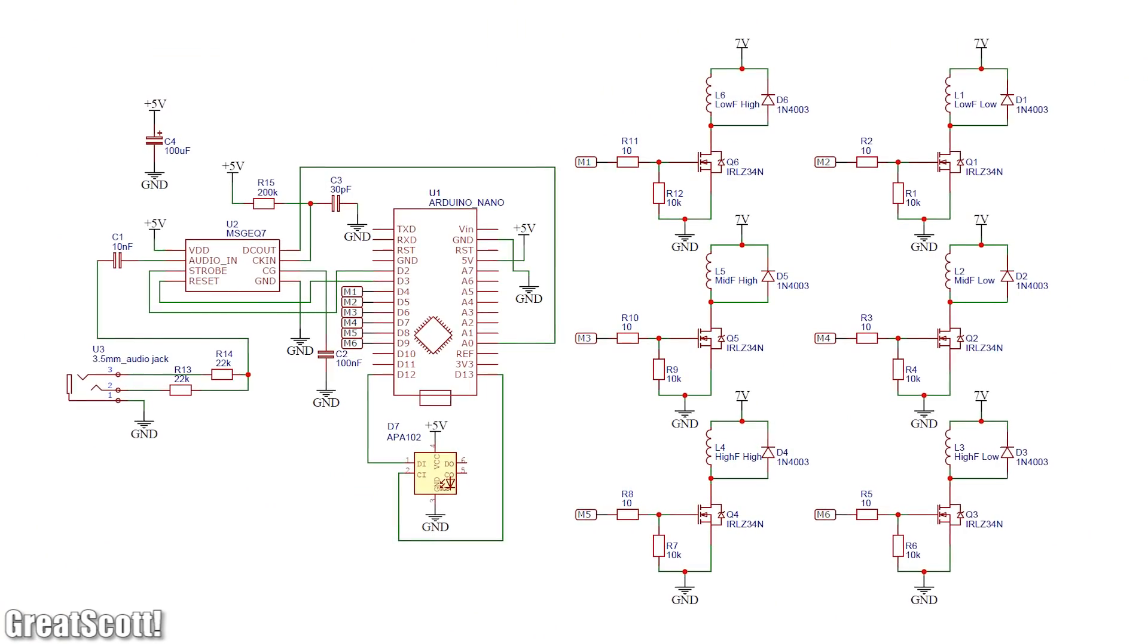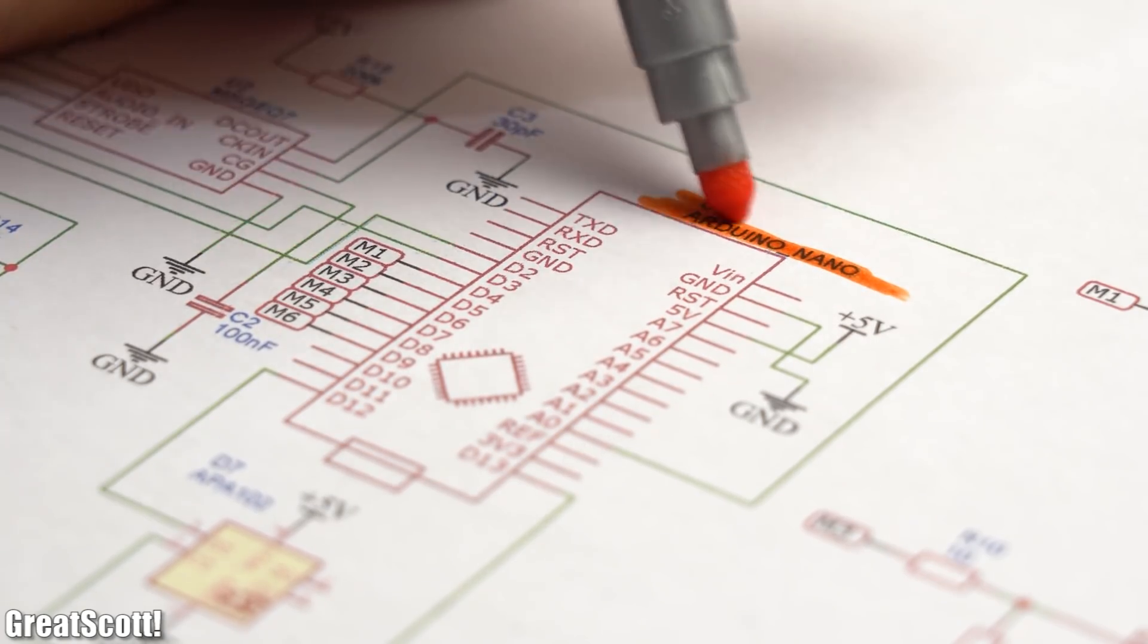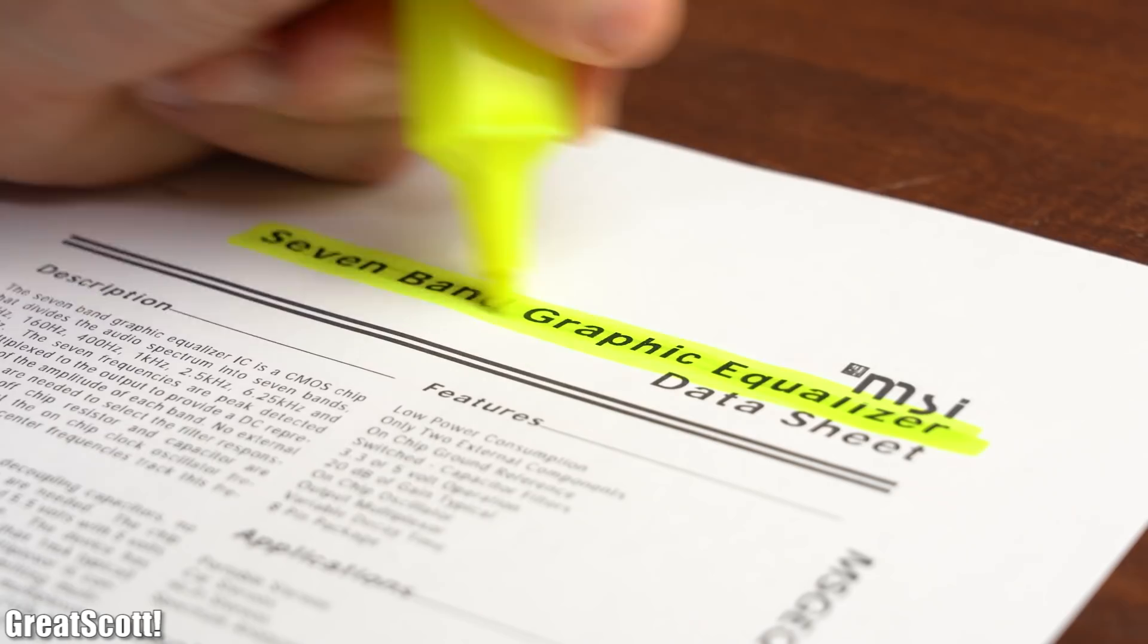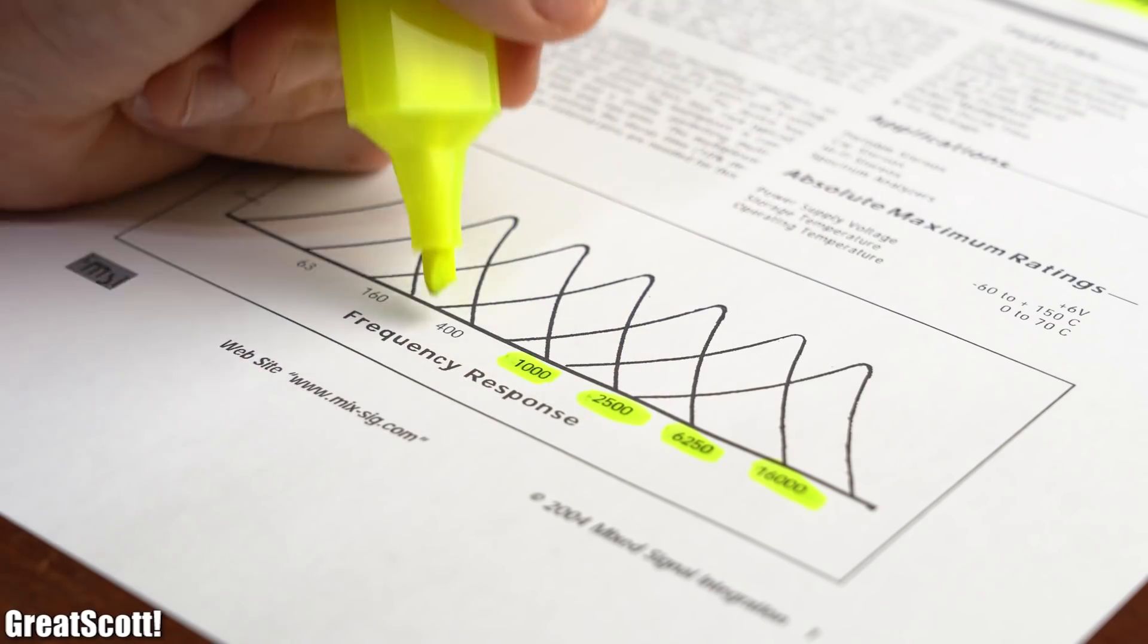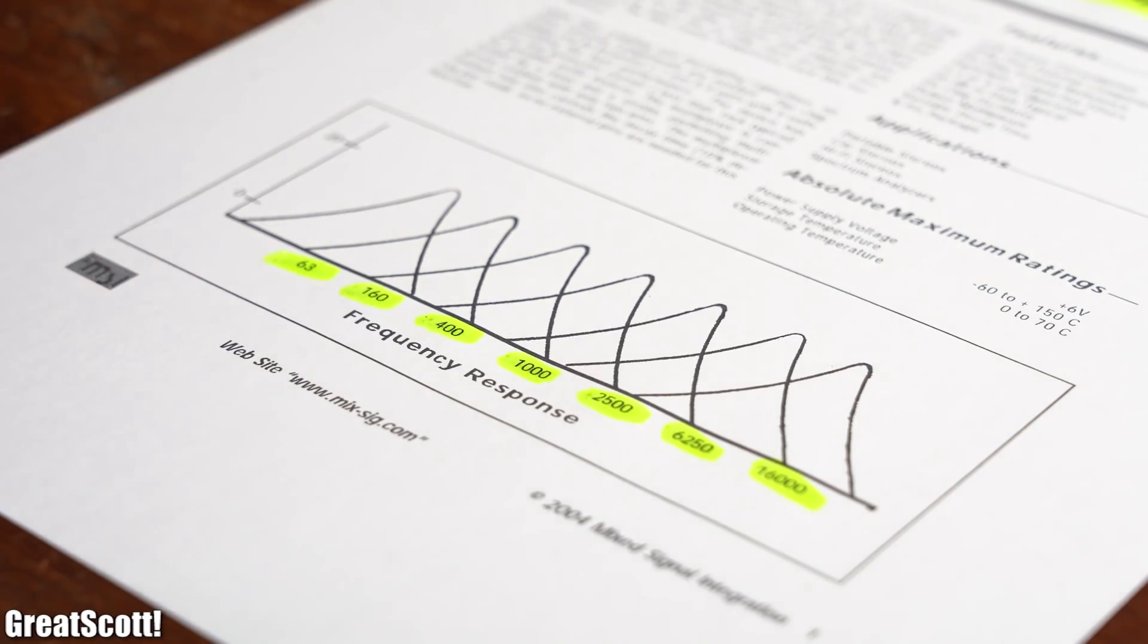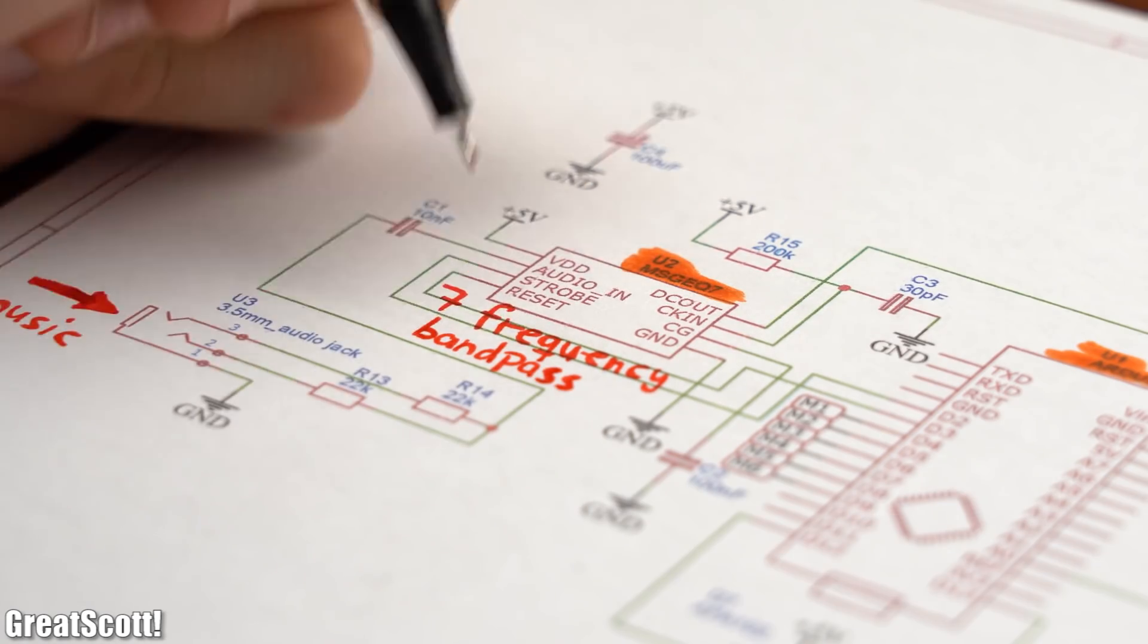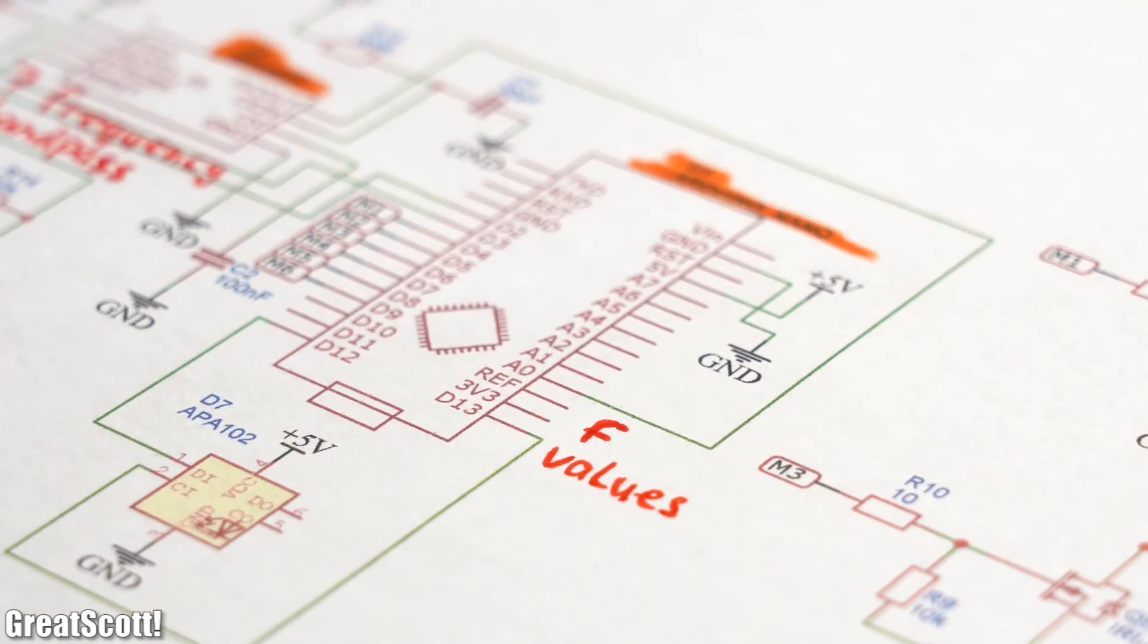An Arduino is of course the heart of the system that controls everything. Then we got an MSGEQ7 IC which is a 7 band graphic equalizer that will give us the frequency response to our music signal for 7 frequency bands. So simply put we feed the music signal in here, the MSGEQ7 does its magic and thus the Arduino knows which frequencies are currently in our music.